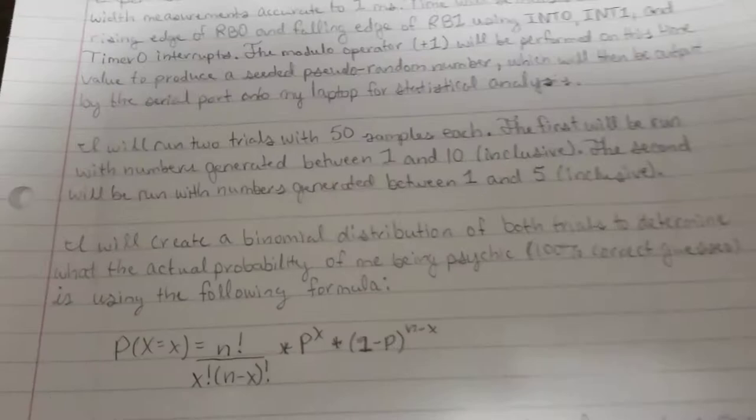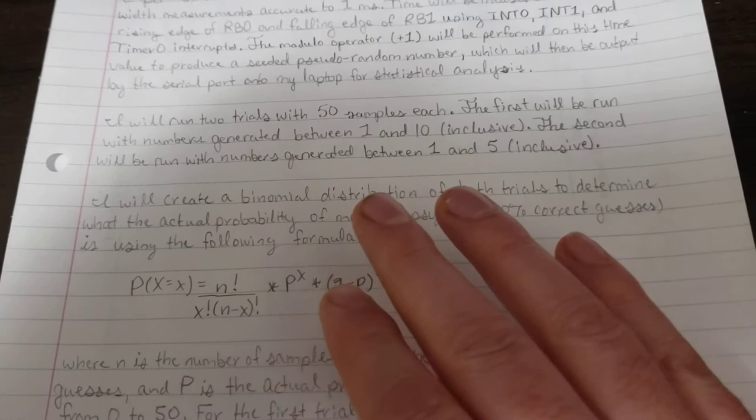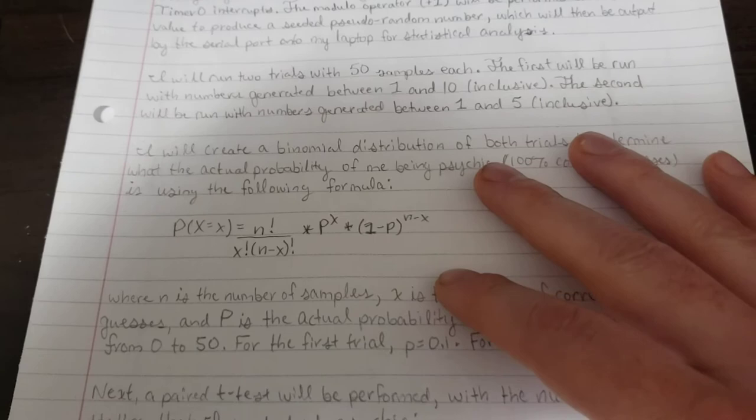I'll run two trials, 50 samples each. The first will be run with numbers generated between 1 and 10 inclusive. The second will be run with numbers generated between 1 and 5 inclusive.